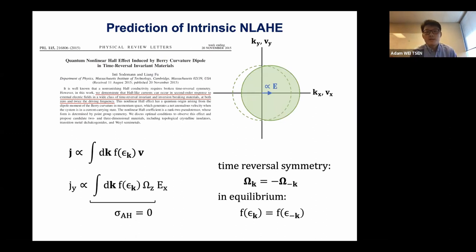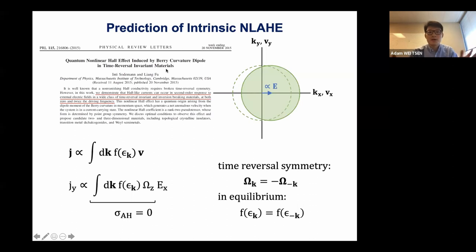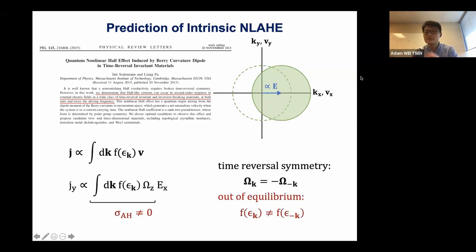In 2015, it was realized there's another way to get an anomalous Hall effect without breaking time reversal symmetry. Sodemann and Fu at MIT published a paper titled 'Non-Linear Hall Effect in Time Reversal Invariant Materials.' Their key inspiration was: what if instead of breaking time reversal symmetry, we just drive the system very hard so that it's no longer in equilibrium? Essentially, the Fermi sphere is shifted very far out and is no longer symmetric, so the anomalous Hall conductivity is not forced to vanish. But this is a nonlinear effect — in the limit of zero electric field, the anomalous Hall conductivity is still zero.